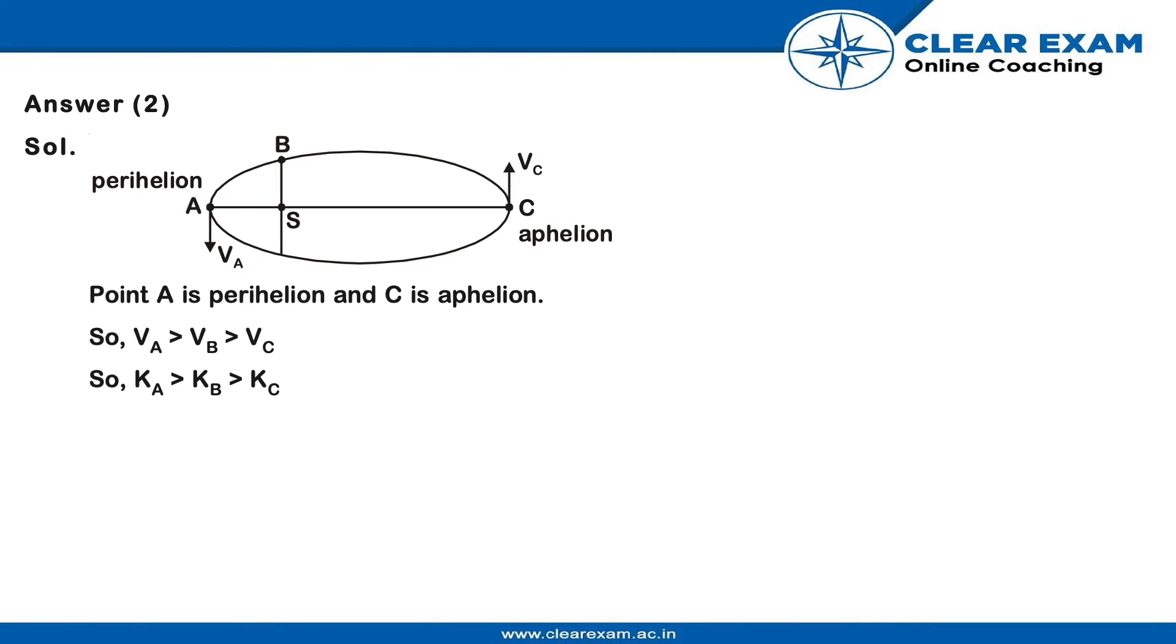As you can see here, point A is perihelion and C is aphelion. So VA is greater than VB greater than VC.